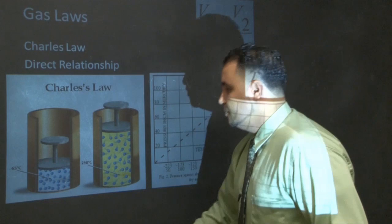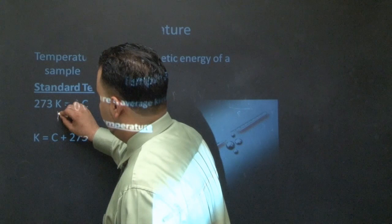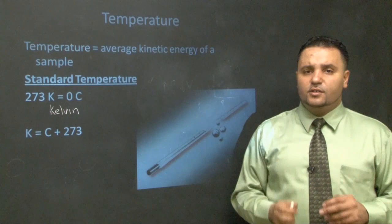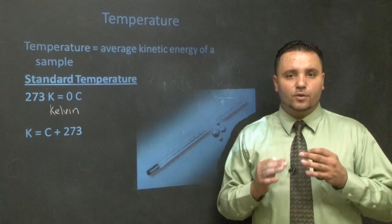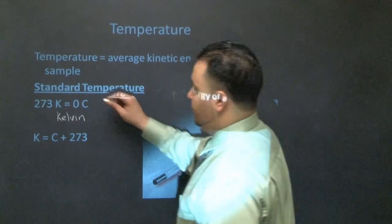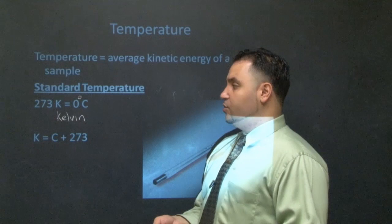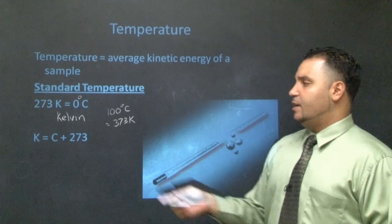Temperature will come up repeatedly. The most important unit is Kelvin — it has no negative values, running from zero upward. Zero degrees Celsius equals 273 Kelvin, so to convert, just add 273 to your Celsius temperature. For example, 100 degrees Celsius equals 373 Kelvin.